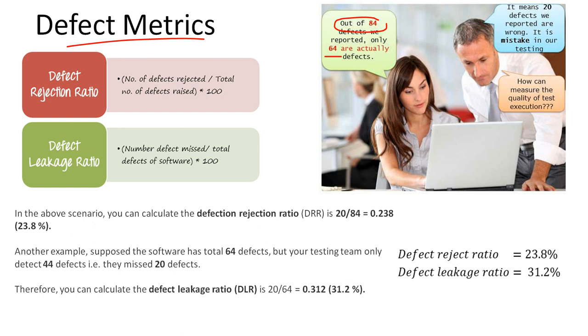How can we measure the quality of our test execution? There are two metrics we have to measure the quality of our execution: one is defect rejection ratio, the other is defect leakage ratio. Both are different.